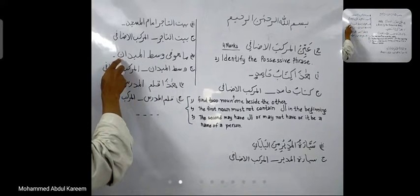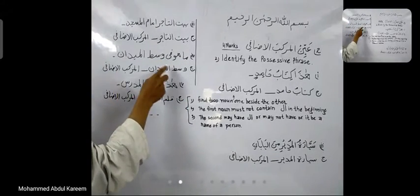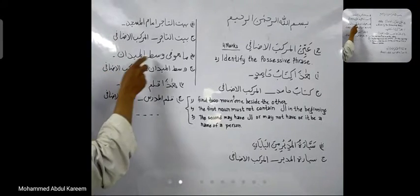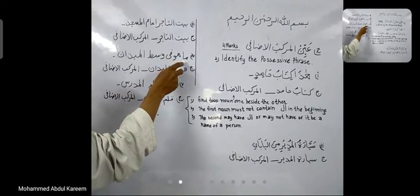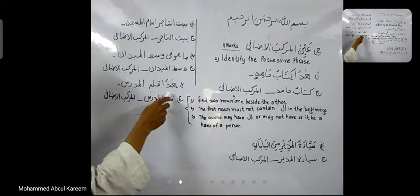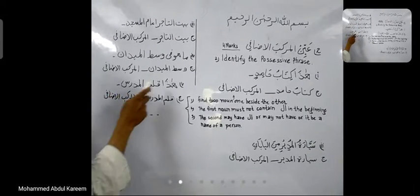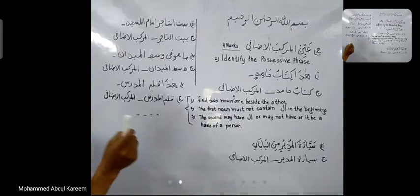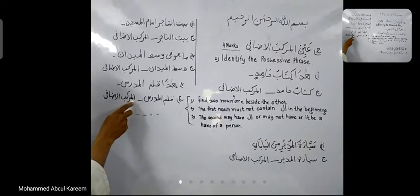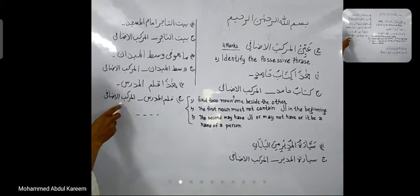'Mahu fi wasatil mayadan' — what is there in the middle of the ground? Wasatil mayadan is the possessive phrase, Al-Muraqab Al-Idaafi. Last sentence: 'Hada kalamul mudir' — this is the teacher's pen, or the pen of the teacher. Kalamul mudir is the possessive phrase. We write Kalamul mudir, then underscore, then write Al-Muraqab Al-Idaafi.